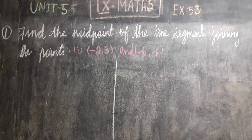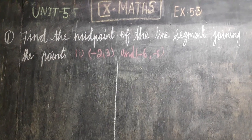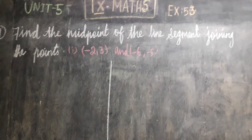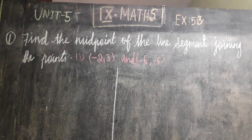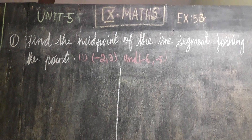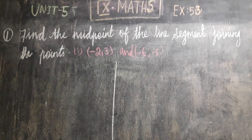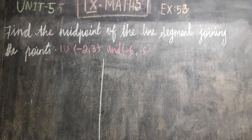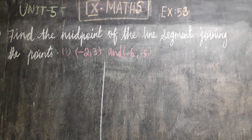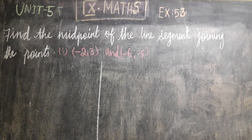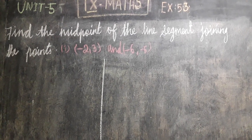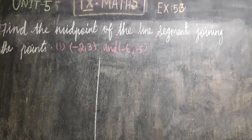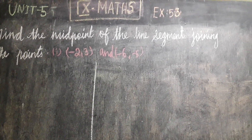Good morning children. Unit 5, exercise 5.3, the first question: find the midpoint of the line segment joining the points minus 2, 3 and minus 6, minus 5.